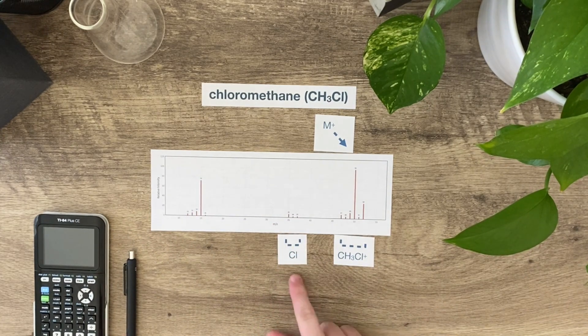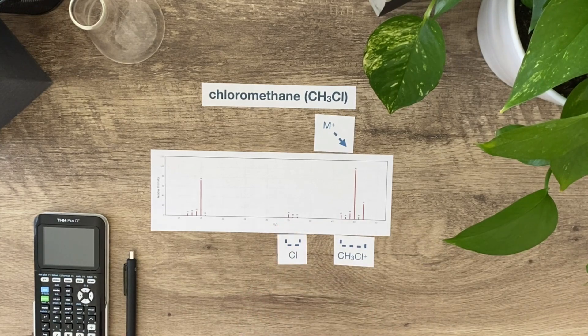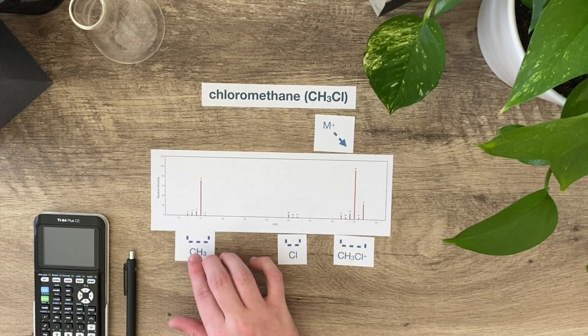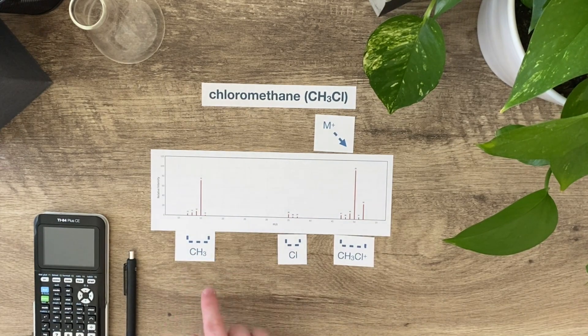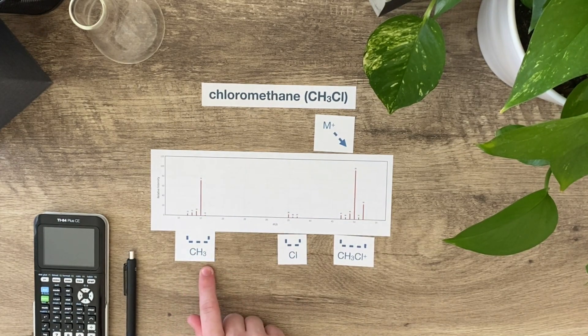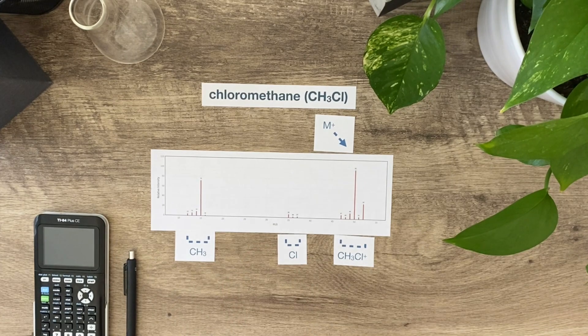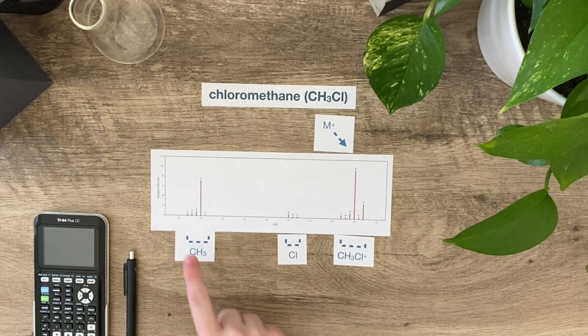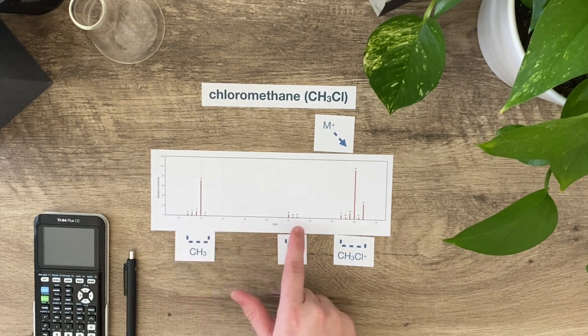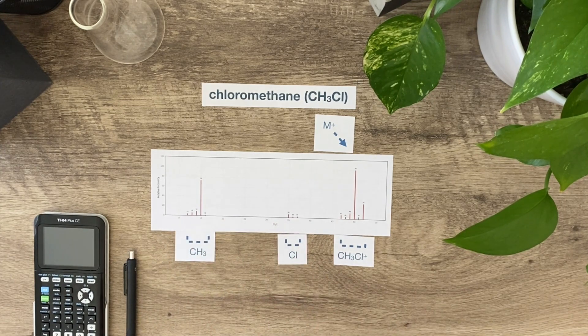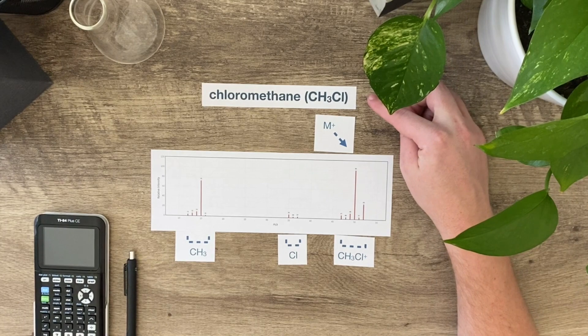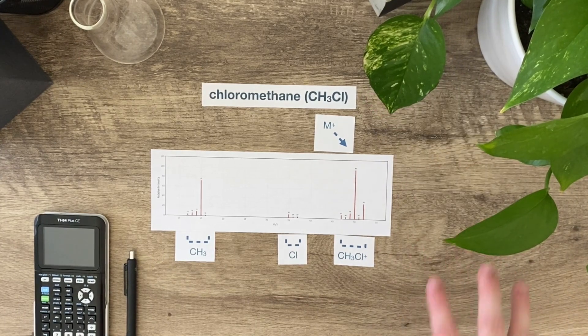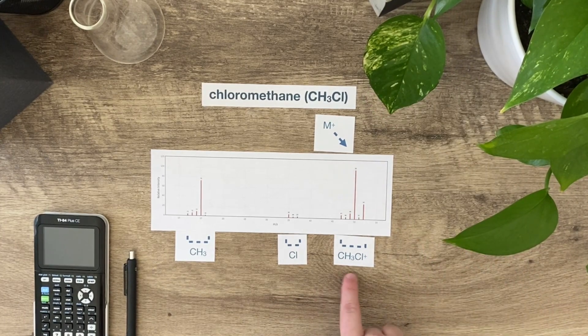When chlorine splits off by itself I get Cl over here. When CH3 splits off by itself I get this peak over here at 15, which makes sense because it's roughly 12 plus 3 for every hydrogen, so roughly about 15 assuming that the isotopes are the same. And of course, remember these other little peaks around them are just associated with other isotopes of those actual atoms.